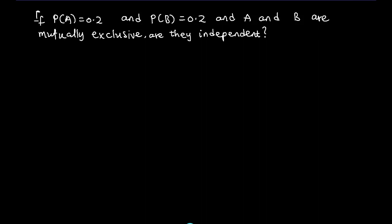Here is a practice example for you to try on your own. The answer is that they are not independent. The question is: if P(A) = 0.2 and P(B) = 0.2, and A and B are mutually exclusive, are they independent? Find out why they are not independent and share your answer in the comment section.